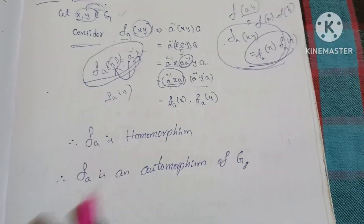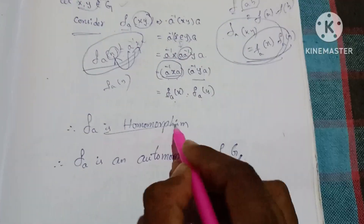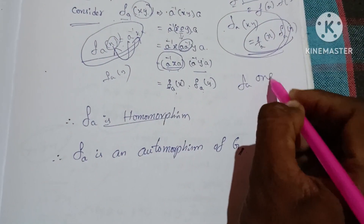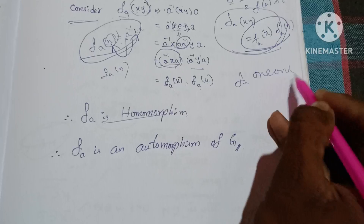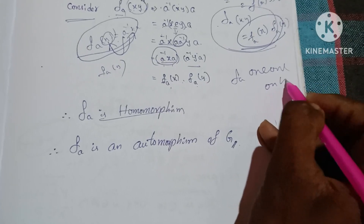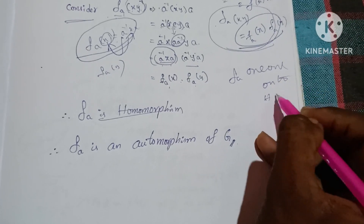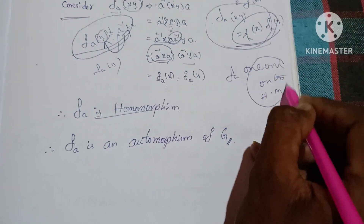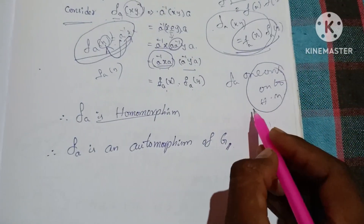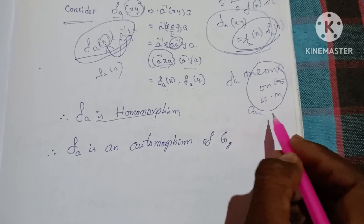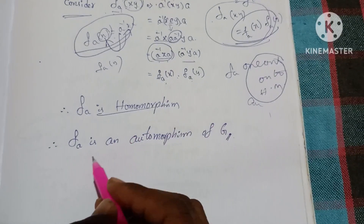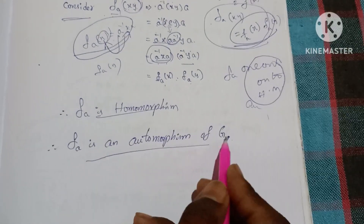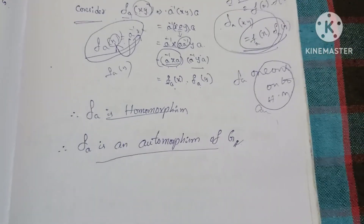Therefore f_a is one-to-one, onto, and a homomorphism. So f_a is an automorphism of G.